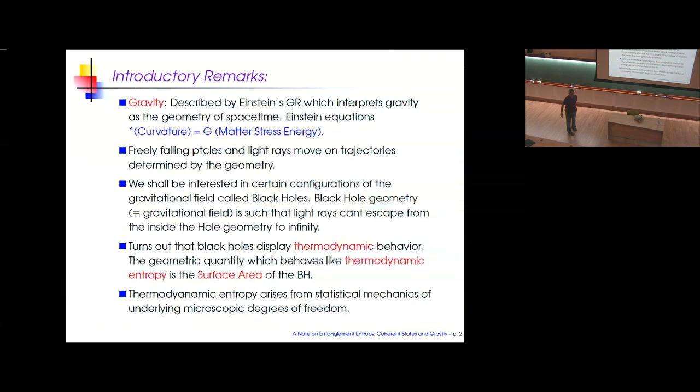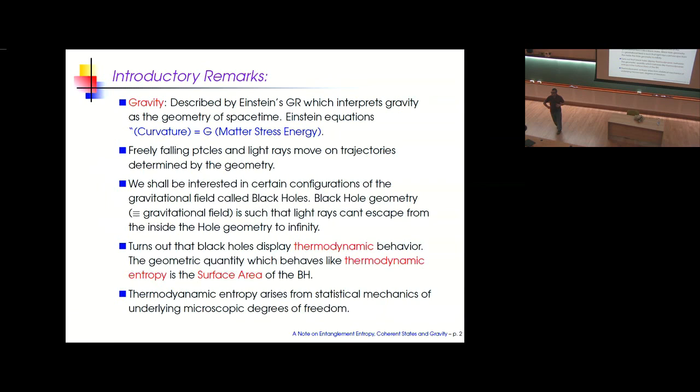The trajectories of freely falling particles and light rays are fixed once you give me the spacetime geometry — they move on the shortest distance paths, the so-called geodesics. Most of this talk I'll be interested in certain configurations of the gravitational field called black holes. The spacetime geometry of a black hole describes certain null trajectories which don't make it out to infinity, so there's a part of the spacetime not visible to the outside — that's why you have a hole.